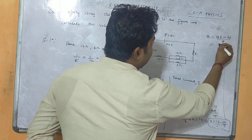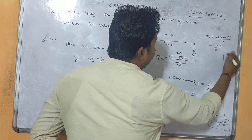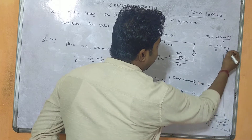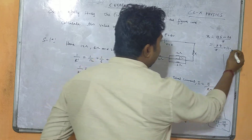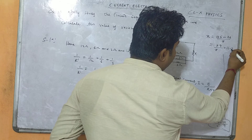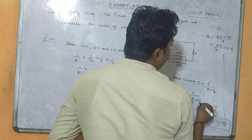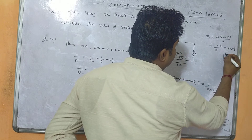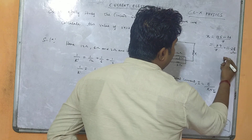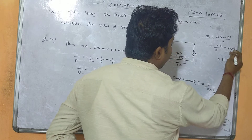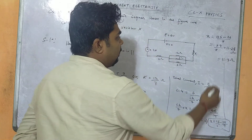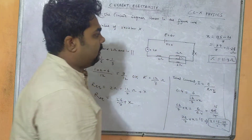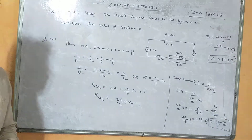Dividing 79 by 7 gives approximately 11.3 ohm. So, rounding off, the value of X is 11.3 ohm. This is our answer, and this is how we solve this type of equation.